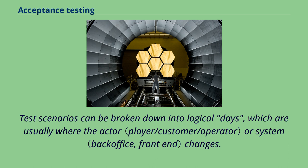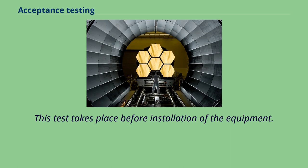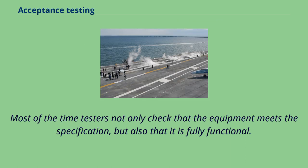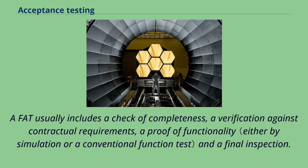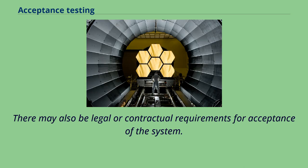In industry, a common UAT variant is a factory acceptance test. This test takes place before installation of the equipment. Most of the time testers not only check that the equipment meets the specification, but also that it is fully functional. A FAT usually includes a check of completeness, a verification against contractual requirements, a proof of functionality, and a final inspection. The results of these tests give clients confidence in how the system will perform in production. There may also be legal or contractual requirements for acceptance of the system.